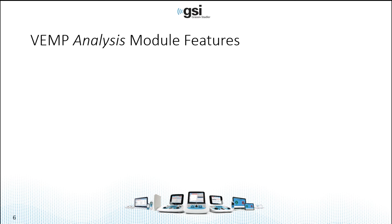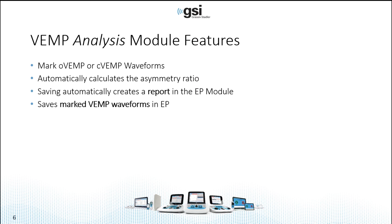The VEMP analysis module features the ability to mark the OVEMP and C VEMP waveforms. It will automatically calculate the asymmetry ratio for you, and when you save the record, it will automatically create a report in the EP module. The VEMP analysis module is outside the EP collection module. Once you've marked and saved the waveforms, they will be stored in the EP module for future reference.